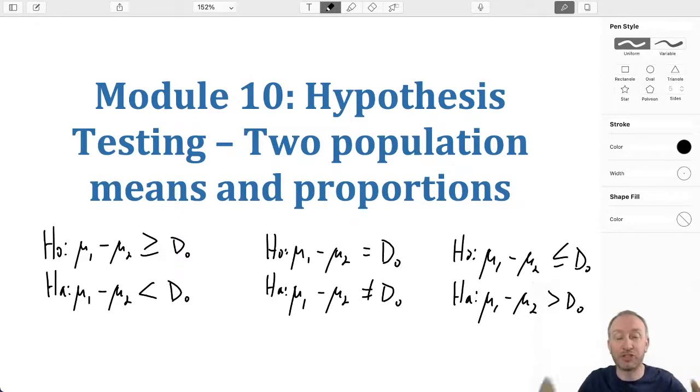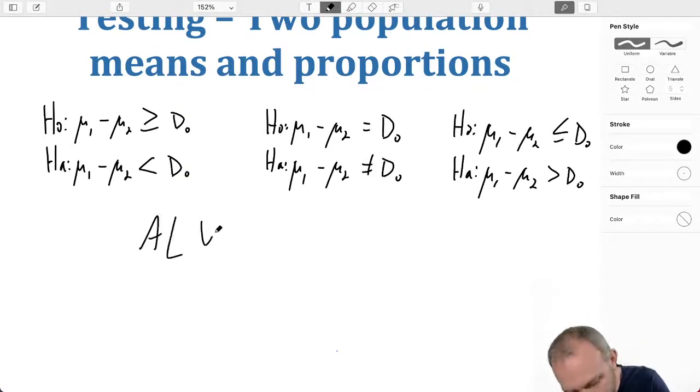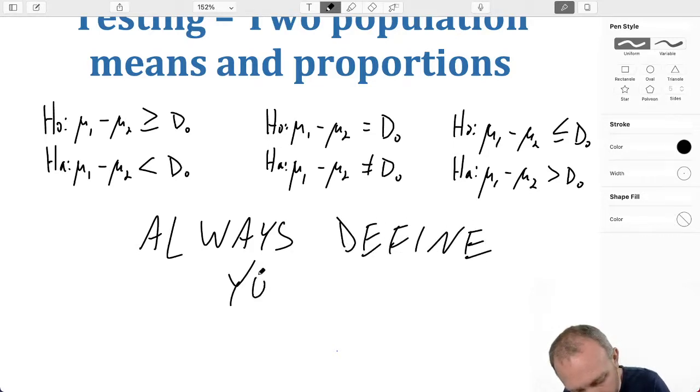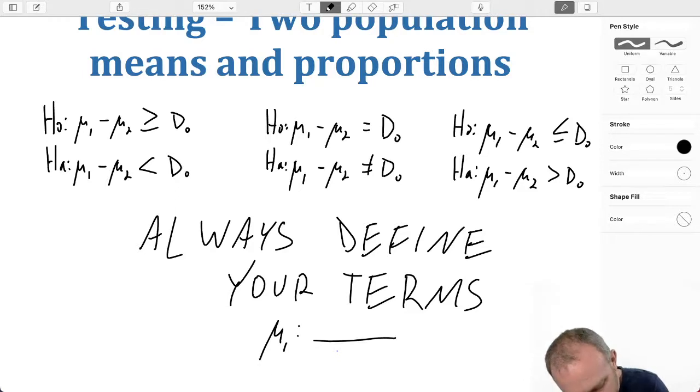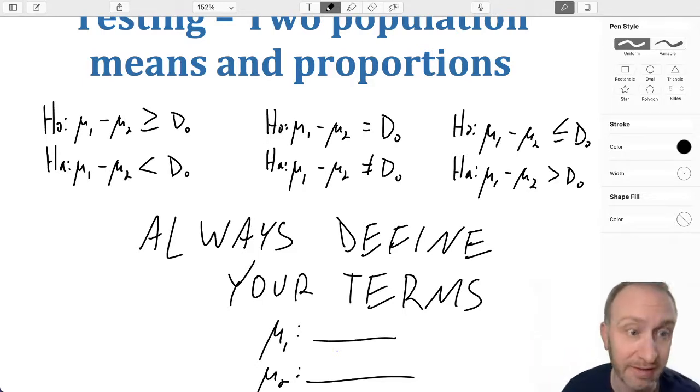Now, I cannot stress this next point enough. This, what I'm about to say, is most relevant for one-tail tests, and that is always define your terms. What is Mu1? What is Mu2? You have to say what those two terms represent, because in the case of a one-tail test, that's going to influence whether you're doing an Upper Tail Test or a Lower Tail Test. We can develop one test in two different ways, depending on how we define our terms.